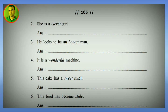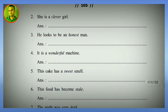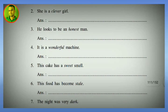'She is a clever girl' — attributive use; 'girl' is the noun, 'clever' is the adjective before it. The alternative predicative form is: 'The girl is clever.'